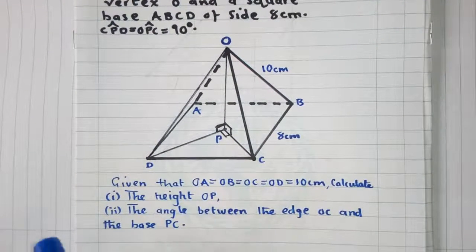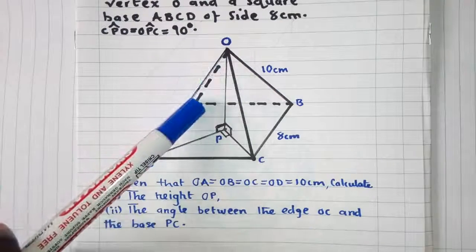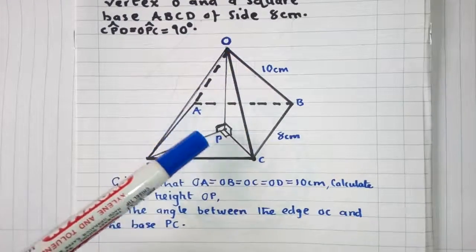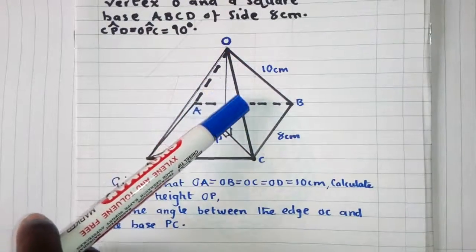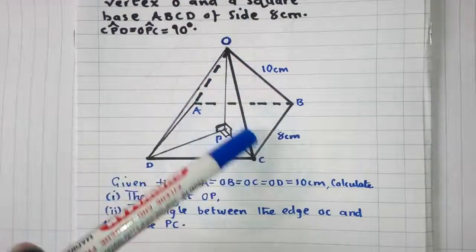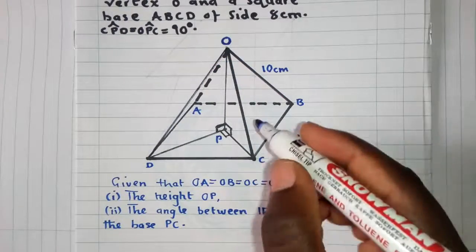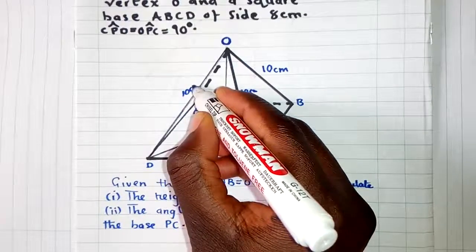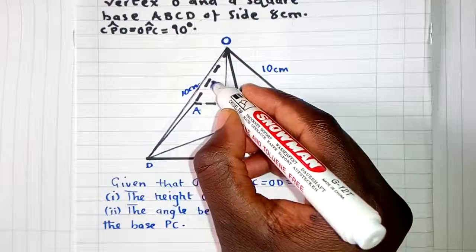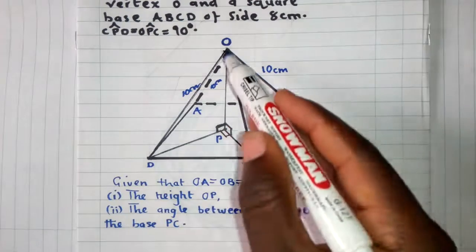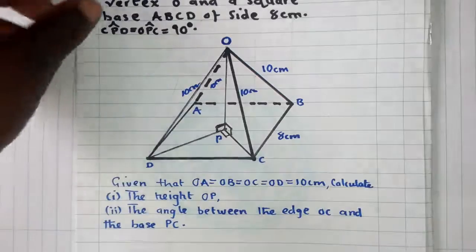There is a very important statement: OA = OB = OC = OD = 10 centimeters. This means all the lines from the corners of the base to the vertex are 10 centimeters each. Now they say: calculate the height OP. How can we calculate the height?